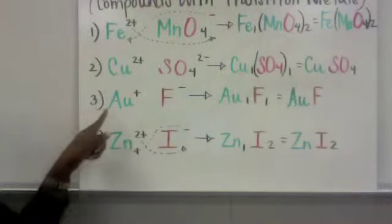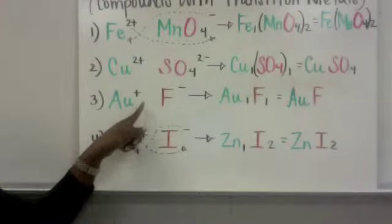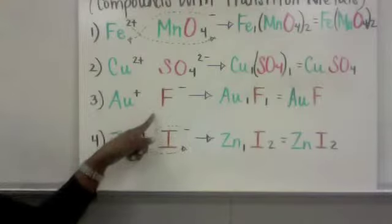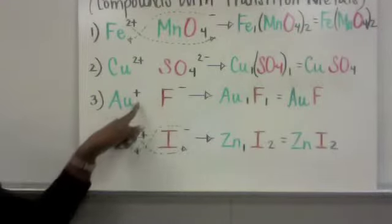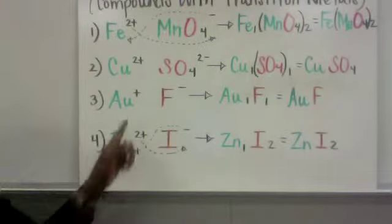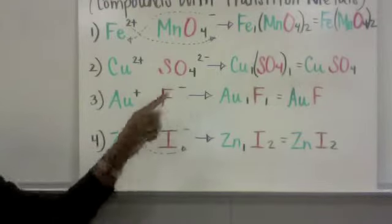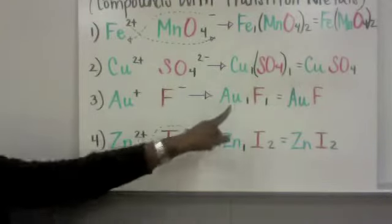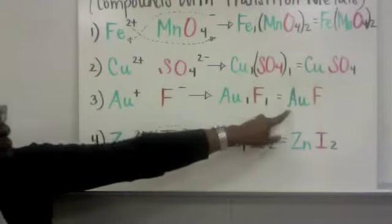Problem three, you have another transition metal. This time this is gold. It has a +1 charge. You have F, which is a part of the halogen family, which is why it's brown. This is fluorine. Gold has a +1 charge. Fluorine has a -1 charge. Remember, if you don't see numbers here, they're understood to be one. So +1 plus -1 does equal zero. Au1 F1 is what it reduces to when you write the formula AuF.